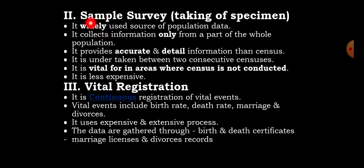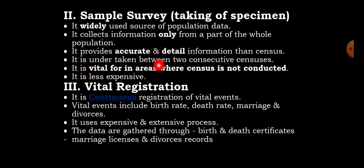The second type of population data is sample survey, or taking a specimen. It is a widely used source of population data. It collects information only from a part of the whole population. It provides more accurate and detailed information than a population census. It is undertaken between two consecutive censuses and is vital in areas where a census has not been conducted. Population census is much more expensive, while sample surveys are less expensive.